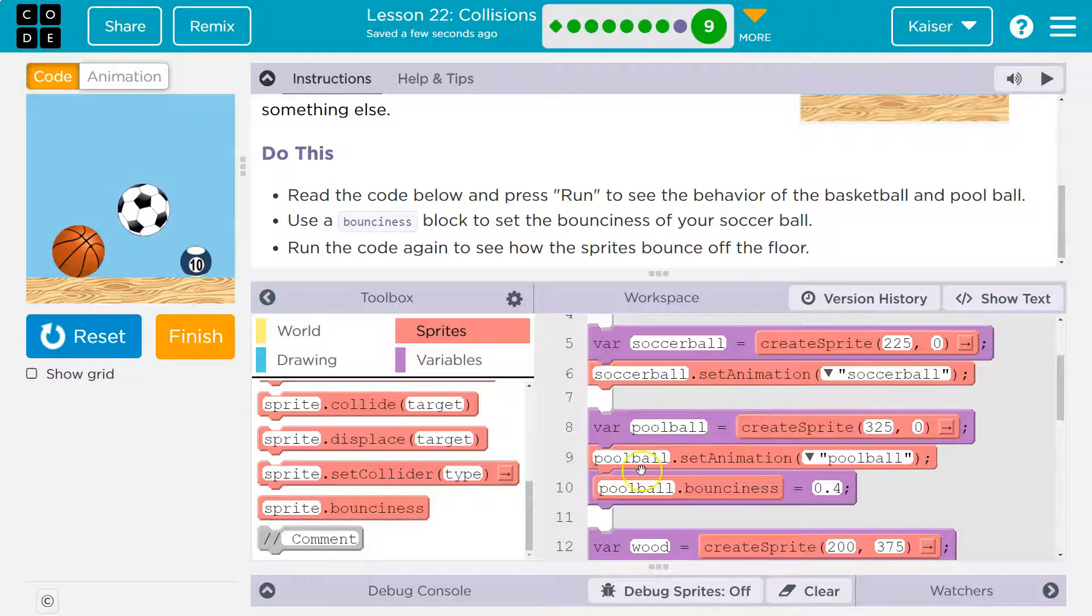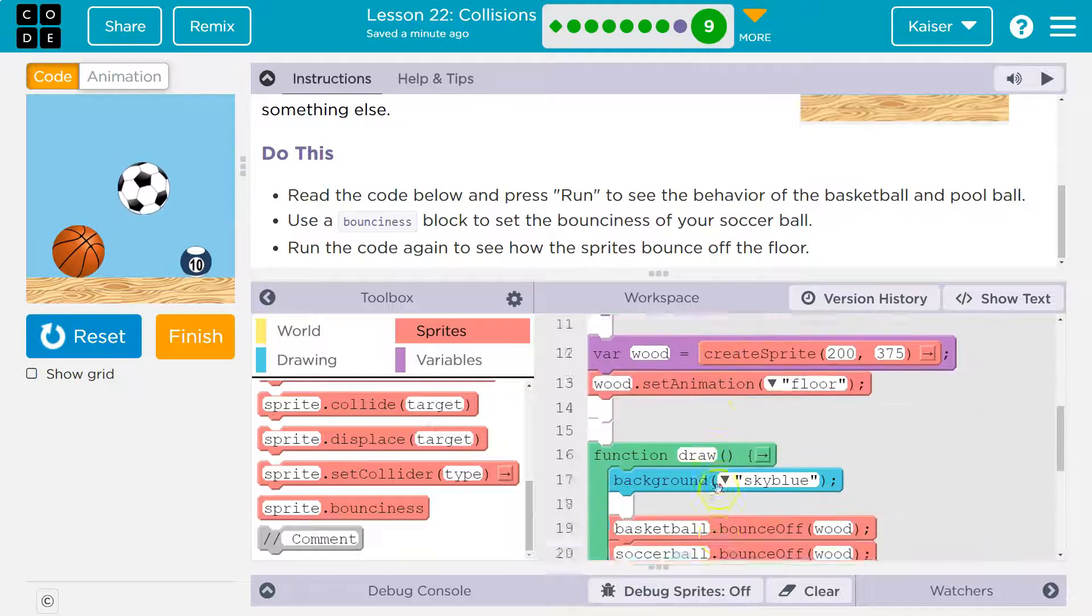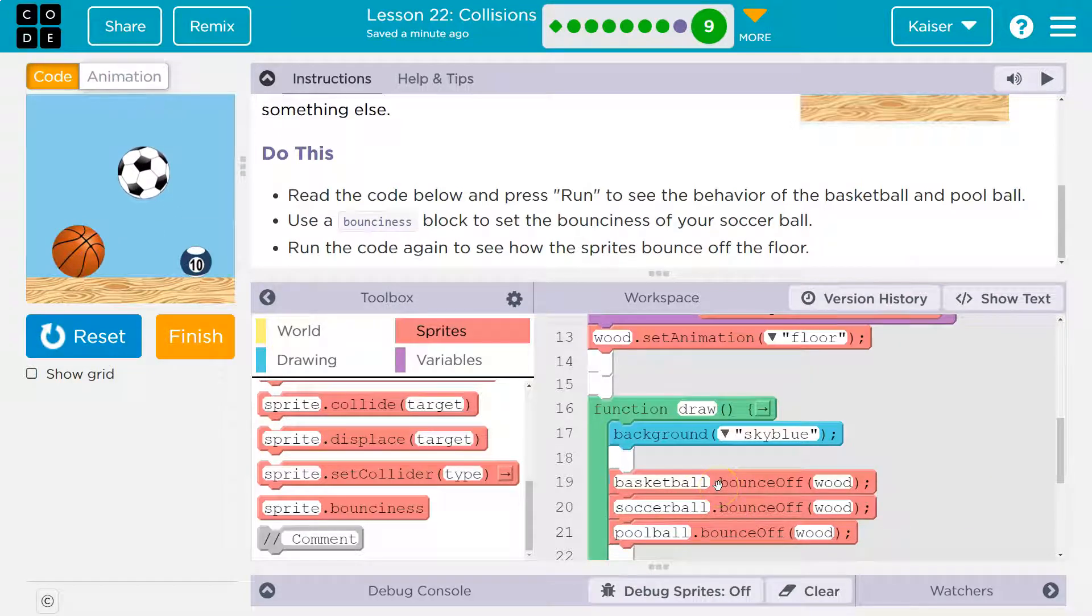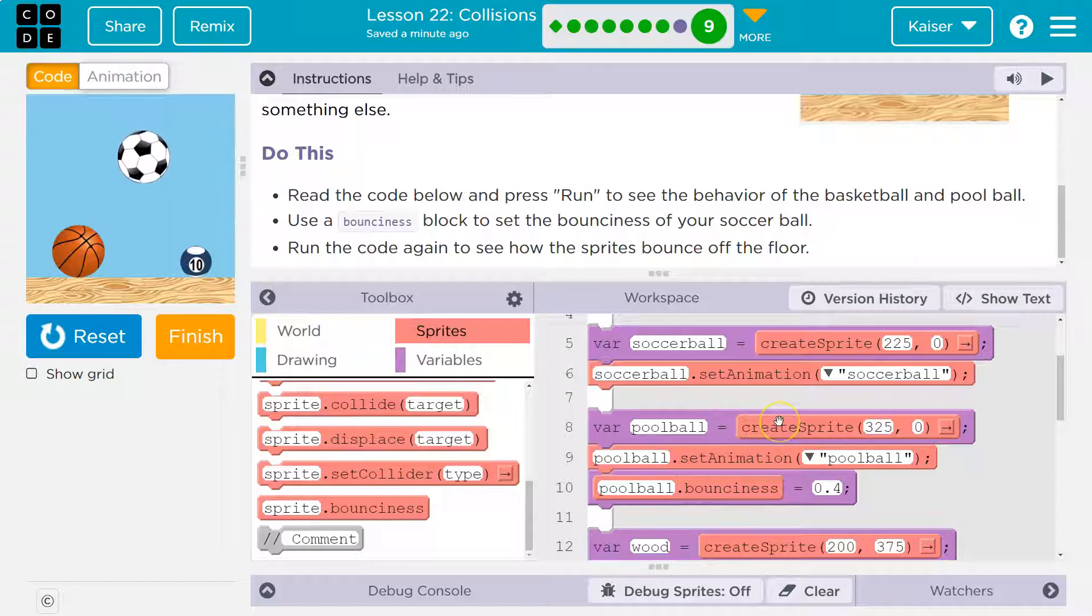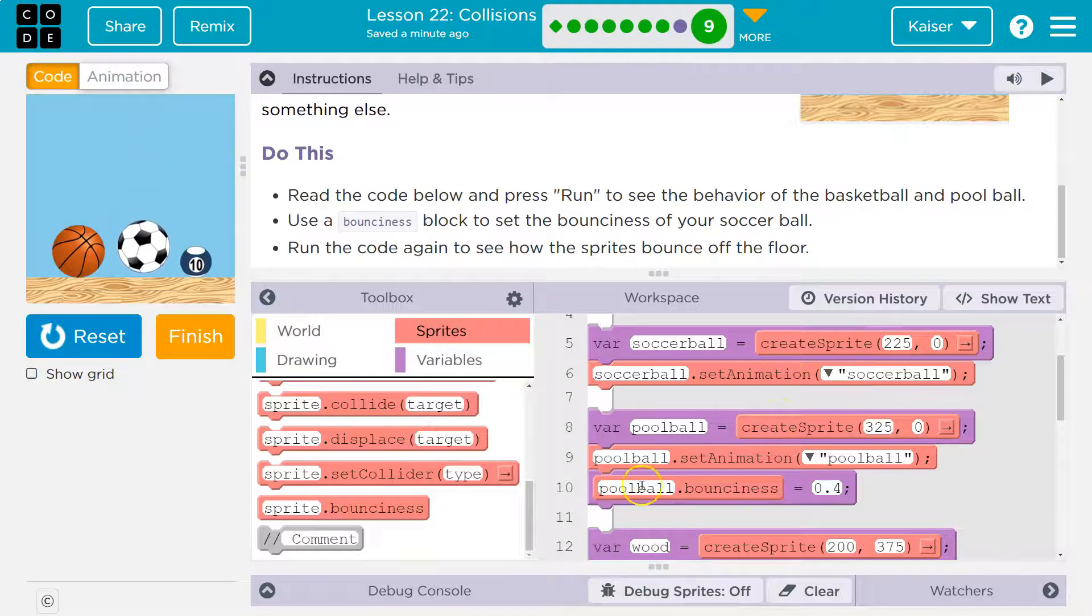Make sure it's under your variable. So we create the pool ball variable, we say hey pool ball you're gonna have this pool ball picture, then they're setting the bounciness. We don't need to do it in the draw loop because the draw loop runs 30 times a second. We're not changing the bounciness just like we're not changing this animation. We put it above because we don't want the computer to attempt to change the bounciness 30 times a second when it doesn't need to.